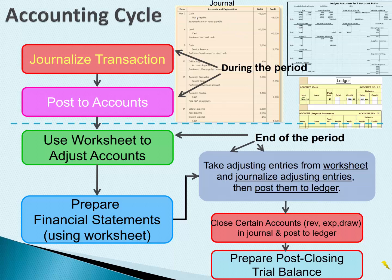We get a source document like a check, bill, or deposit slip and we put it in the journal. Each journal transaction is then posted to either the T-account version of the ledger or the official version of the ledger. That's going to be happening repeatedly throughout the accounting period. And then at the end of the period, which is everything below the blue line, the accountant is going to use a worksheet.